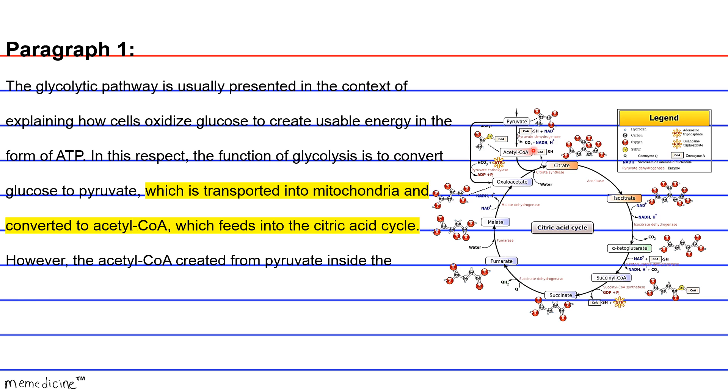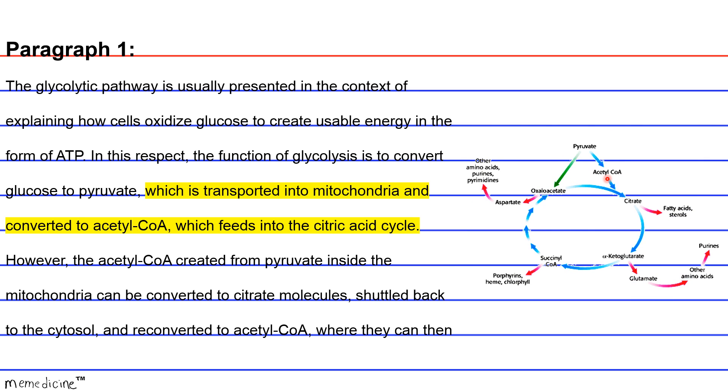However, acetyl-CoA created from pyruvate inside the mitochondria can be converted into citrate molecules and then shuttled back to the cytosol and reconverted again to acetyl-CoA, where they can be used to synthesize fatty acids such as palmitate.